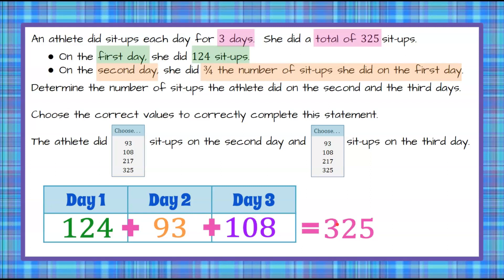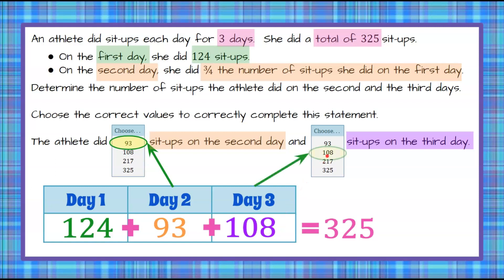Now it's time to answer the question. We're asked for sit-ups on the second day — we can see that's 93. The last box is sit-ups on the third day, so we go to day three in our table: that's 108. We circle or click that drop-down value. The athlete did 93 sit-ups on the second day and 108 sit-ups on the third day.